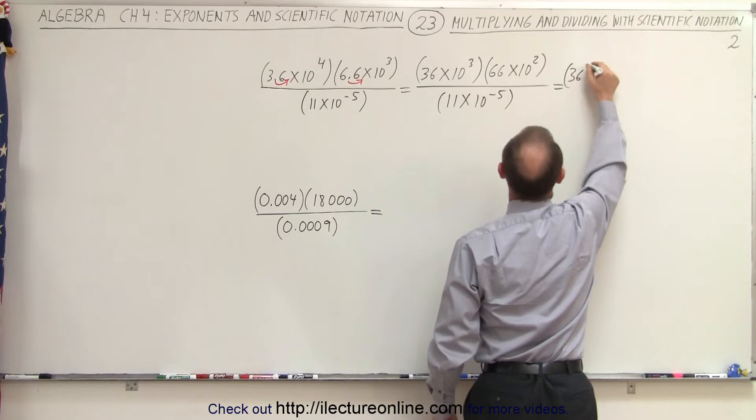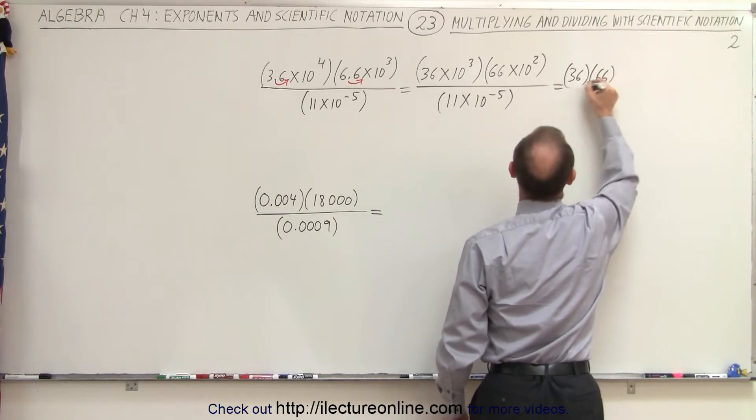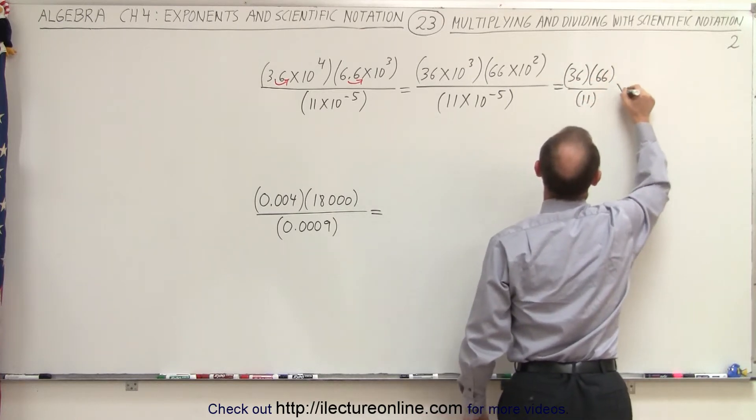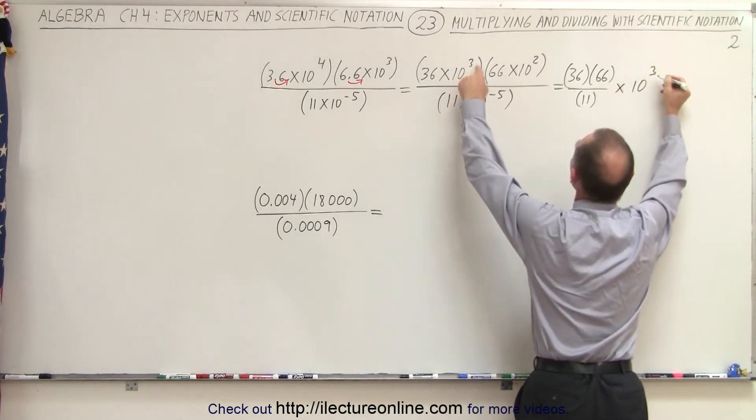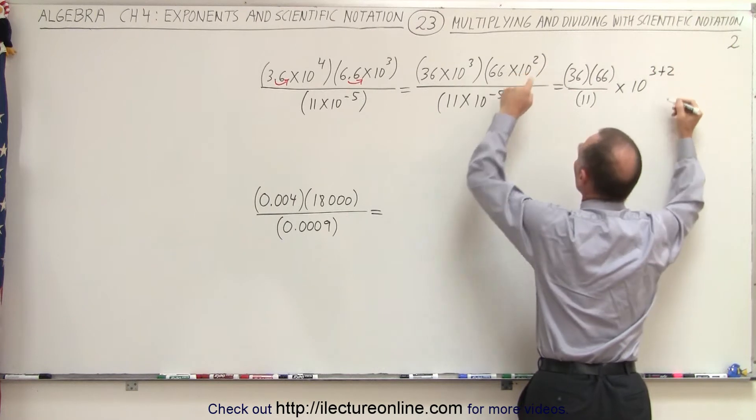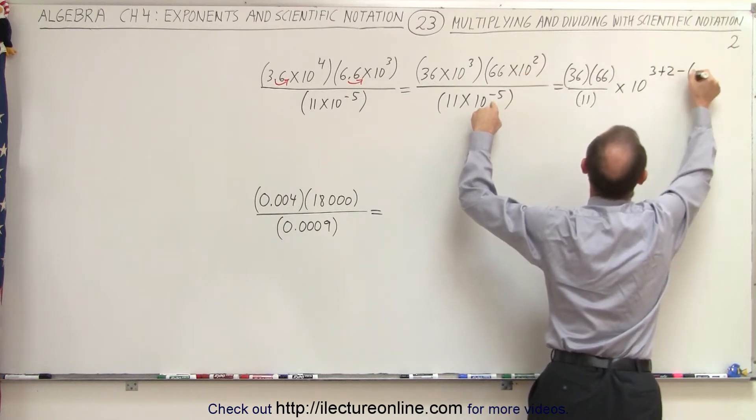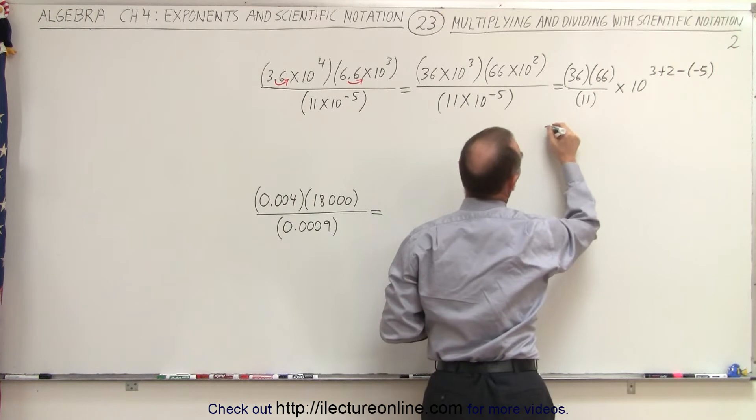We get 36 multiplied times 66 divided by 11. And then we multiply that times 10. When we add exponents, we get 3 plus 2. And we subtract what's in the denominator, a minus minus 5.